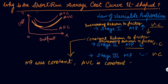Average total cost follows the same pattern as average variable cost because average total cost is the sum of average variable cost and average fixed cost. Therefore, due to the law of variable proportions, the average cost curve is U-shaped in the short run.